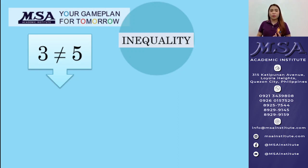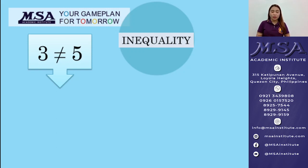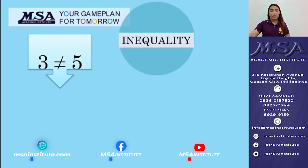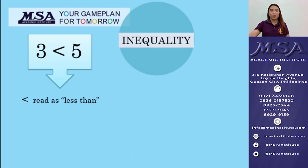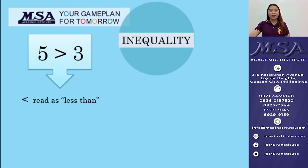When two numbers are not equal, one must be smaller than the other or one must be larger than the other. So, we can say that 3 is less than 5, and that inequality symbol can be read as less than. We also have 5 is greater than 3, and that inequality symbol can be read as greater than.